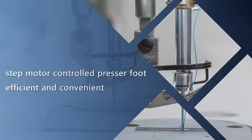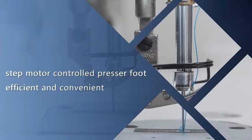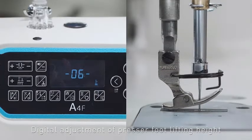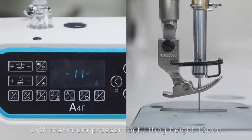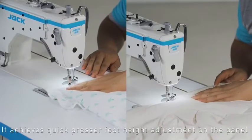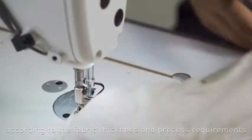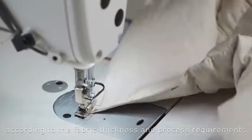The step motor controlled presser foot is efficient and convenient. Digital adjustment of presser foot lifting height reaches a maximum of 13 millimeters. It achieves quick presser foot height adjustment on the panel during the sewing process, according to fabric thickness and process requirements.